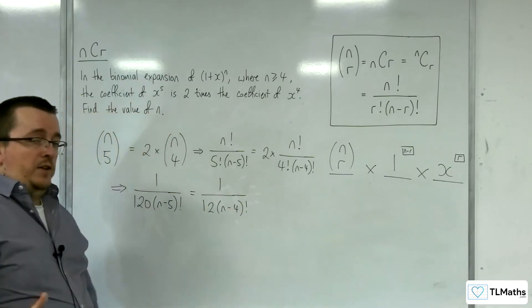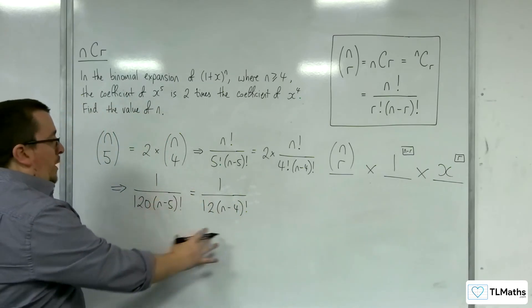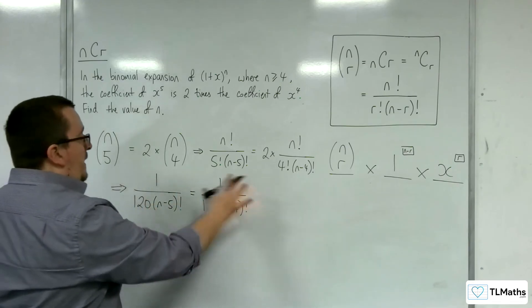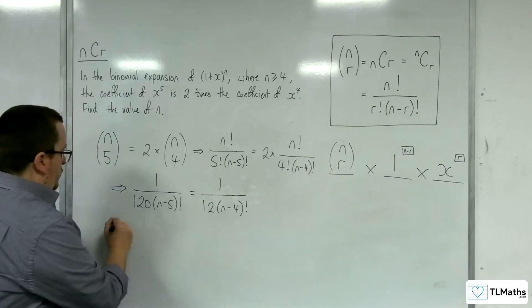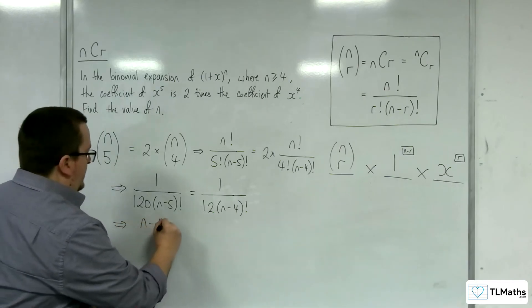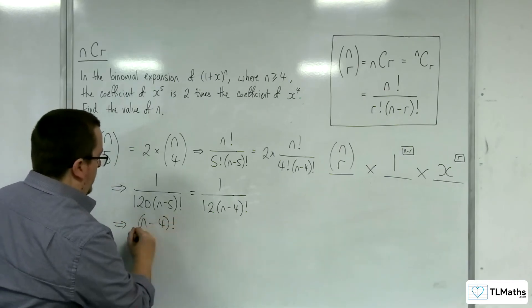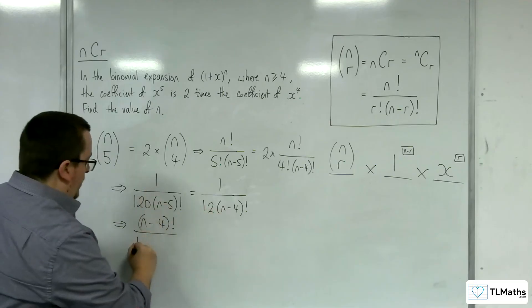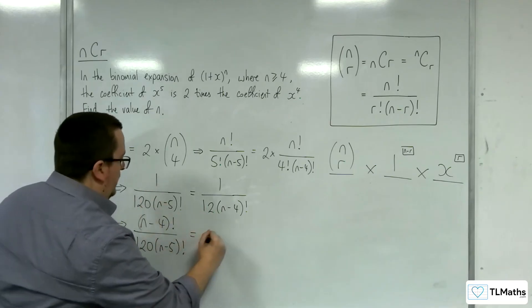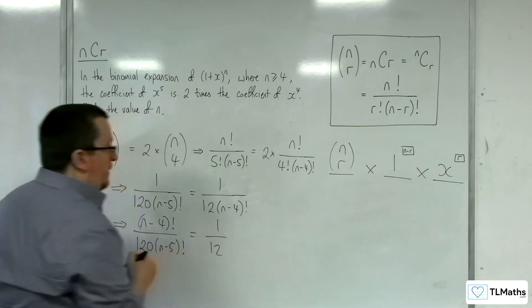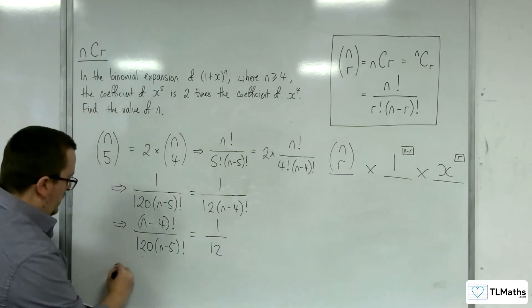Now just as we did in the previous video, to solve this equation, I'm going to multiply both sides by the larger of the 2 factorials, so n take away 4 factorial. So we're going to get n take away 4 factorial, multiplying both sides by that, over 120, n take away 5 factorial, is equal to 1 over 12.